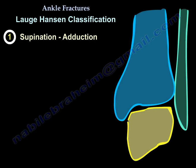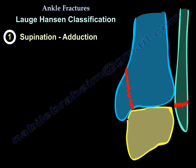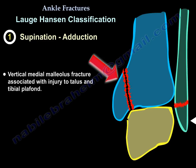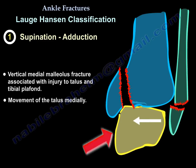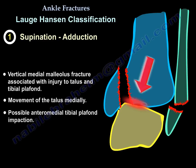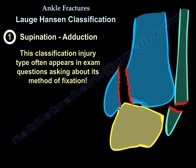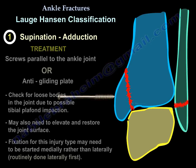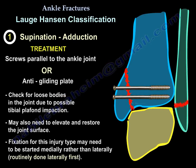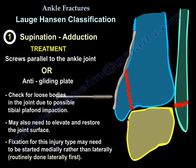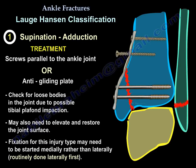Number one, very important: supination-adduction injury. There is a vertical fracture of the medial malleolus, movement of the talus medially, impaction of the medial tibial plafond, and a transverse distal fracture of the fibula. This comes up repeatedly in exams, asking how you fix it — either screws parallel to the joint or an anti-glide plate. You probably need to open the joint to elevate and restore the joint surface, and you may want to start medially rather than laterally as is routine for other ankle fractures.